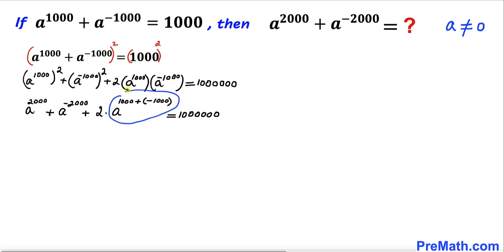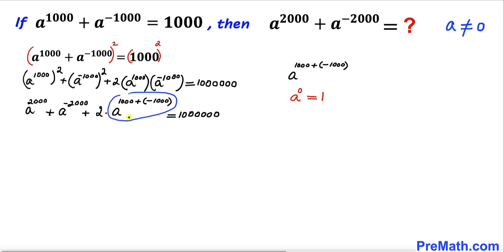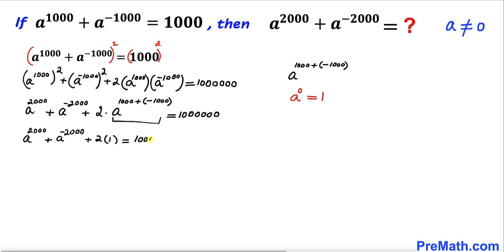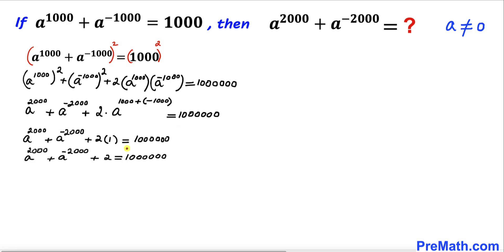Now let's focus on the exponent: 1000 − 1000 = 0, so we get a^0, and a^0 equals 1 (given that a ≠ 0). So I'll replace that part by 1. Our equation becomes a^2000 + a^(-2000) + 2·(1) = 1,000,000.